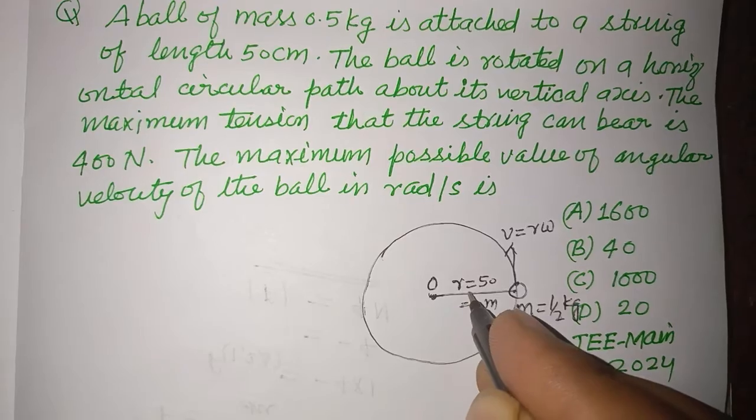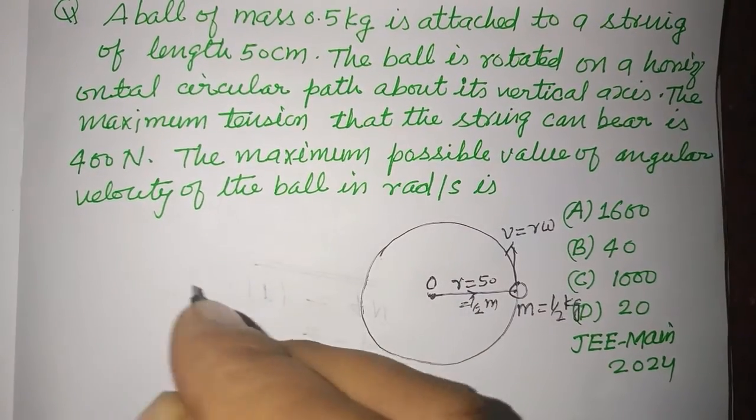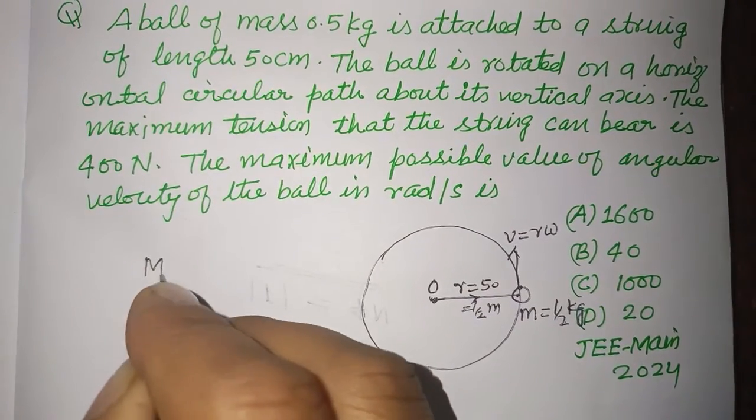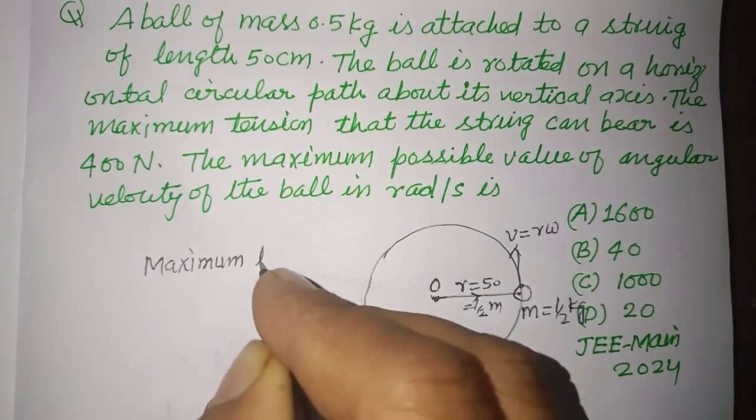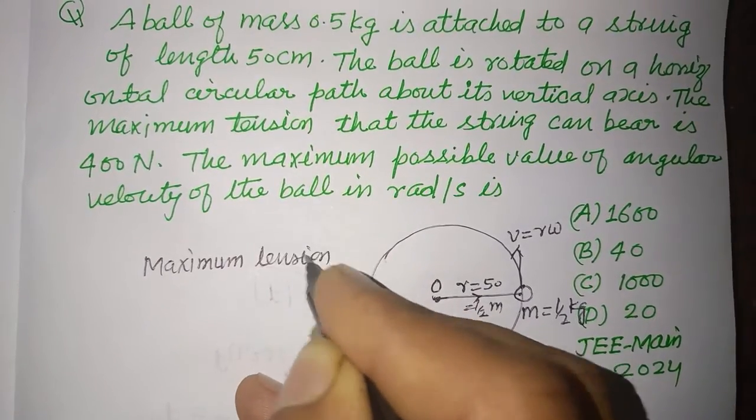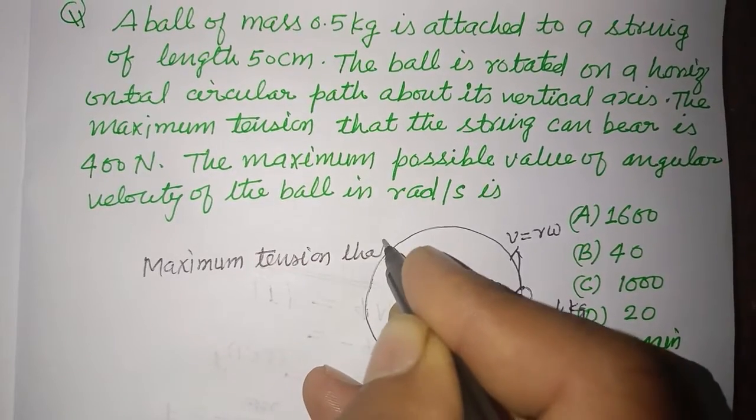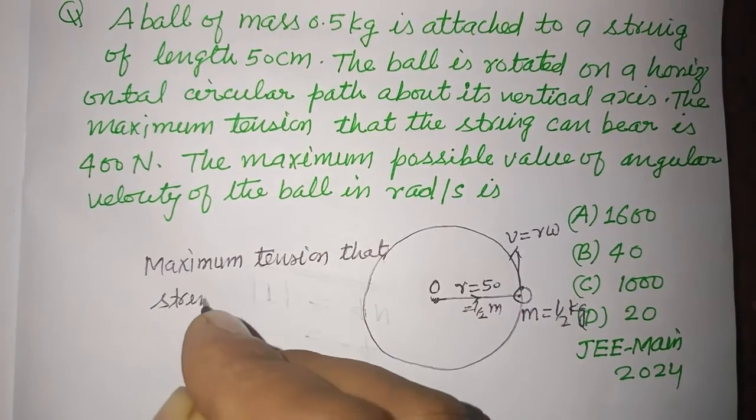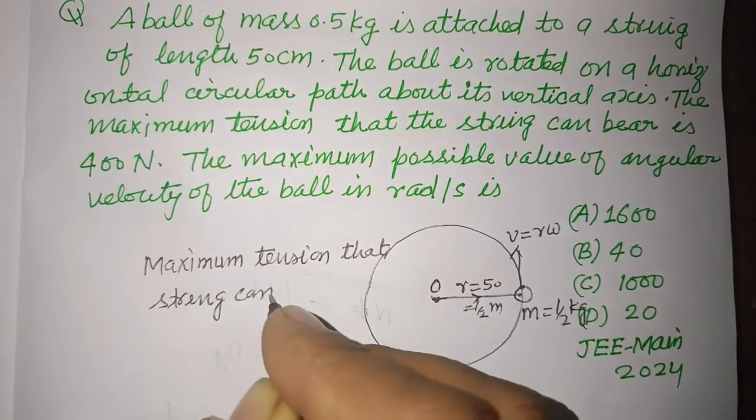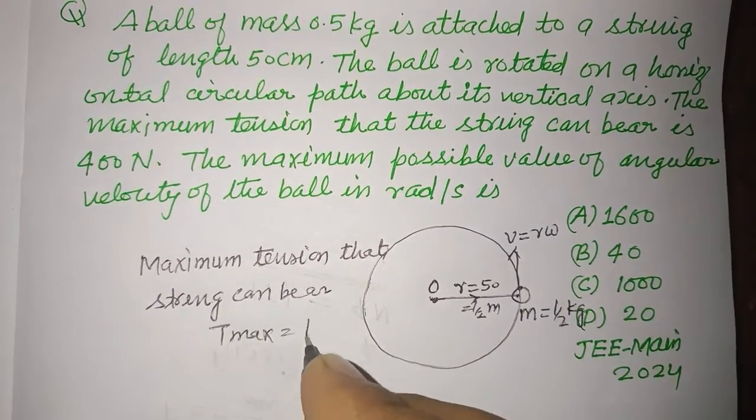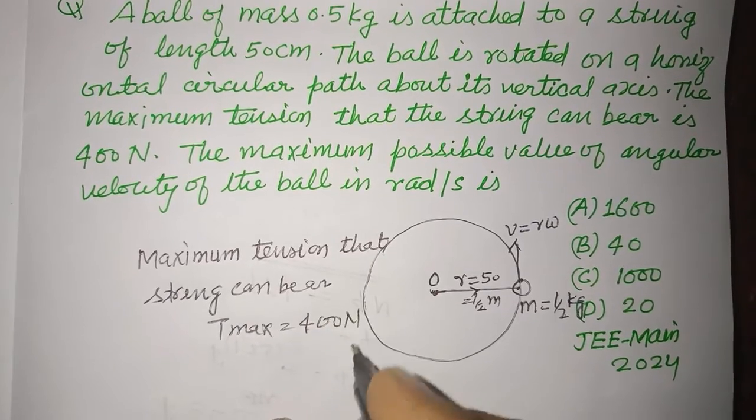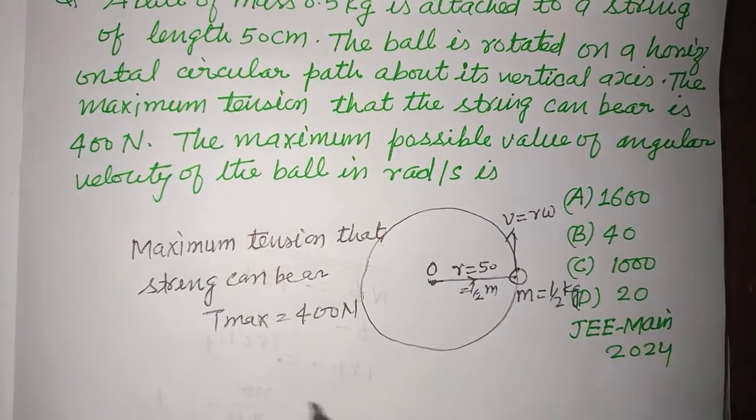The maximum tension that the string can bear, T maximum is given to us 400 N. And this maximum tension comes from the centripetal force.